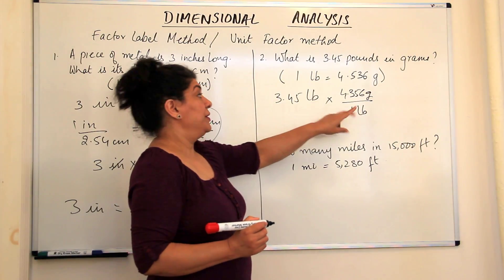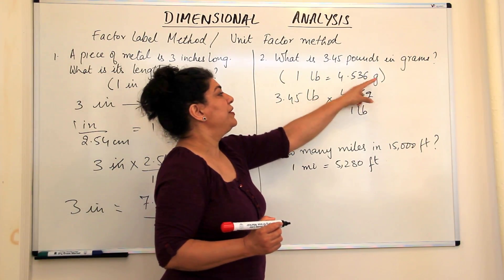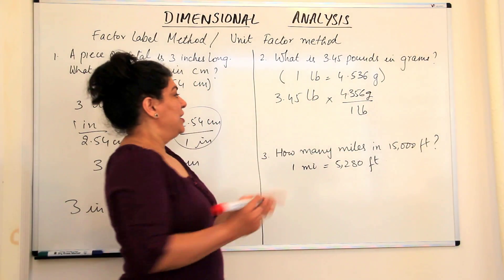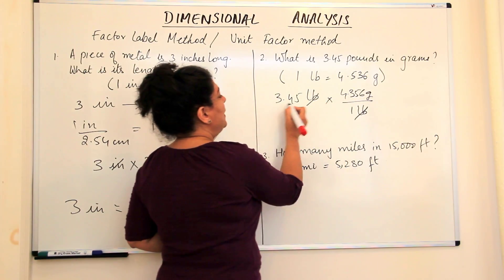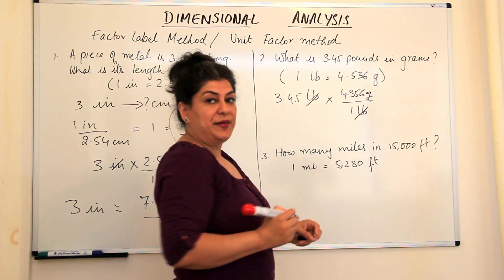If I had used the other unit factor, it would have been 1 pound over 4.536 grams, but that would not have given me the desired result. So I cancel out the pounds and now I'm left with 3.45 into 4.536 grams.